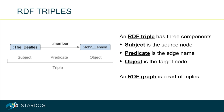RDF has a special terminology to refer to the nodes and edges in a graph. An edge is called a triple because each edge has three components. The source node for the edge is called the subject, the target node is called the object, and the edge identifier specifying the kind of the relationship is the predicate. The identifiers used for predicates are called properties. Formally, an RDF graph is defined as a set of triples.